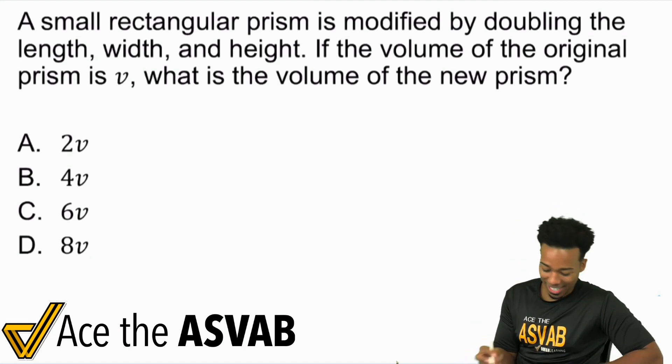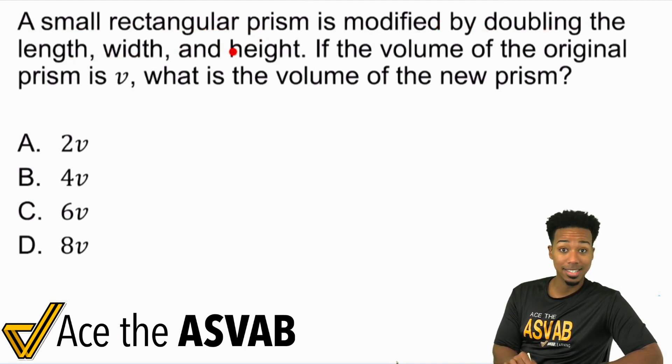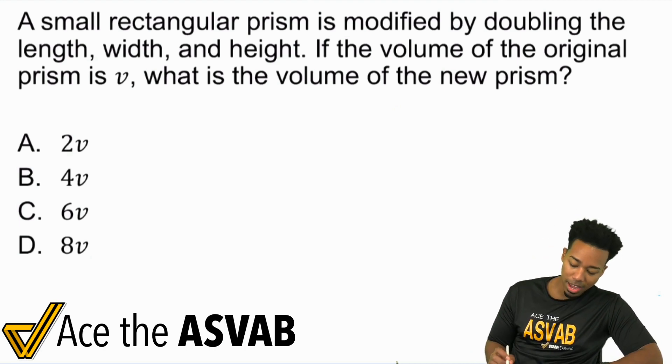So with that said, let's go ahead and get started here. A small rectangular prism is modified by doubling the length, width, and height. If the volume of the original prism is V, what is the volume of the new prism?